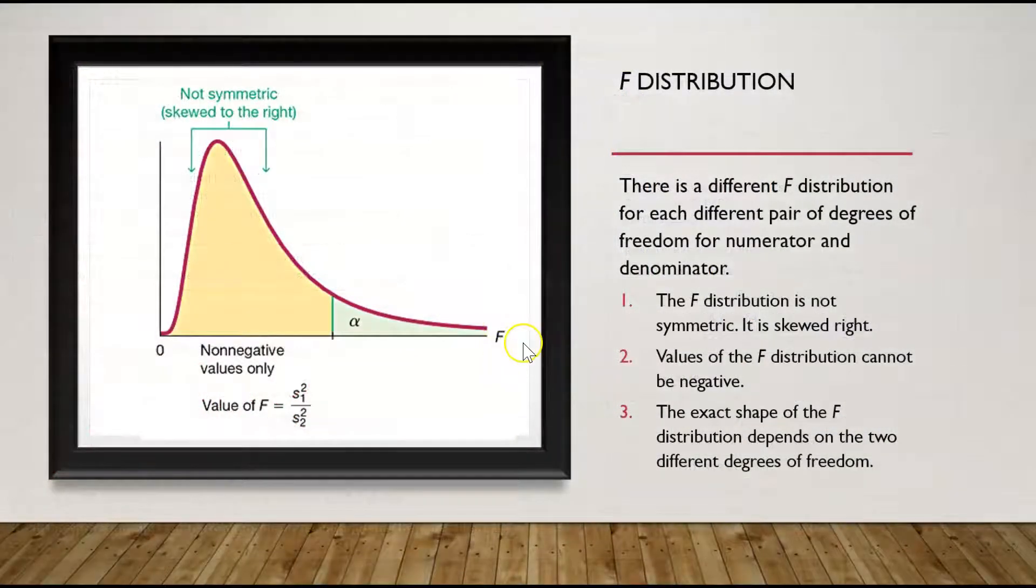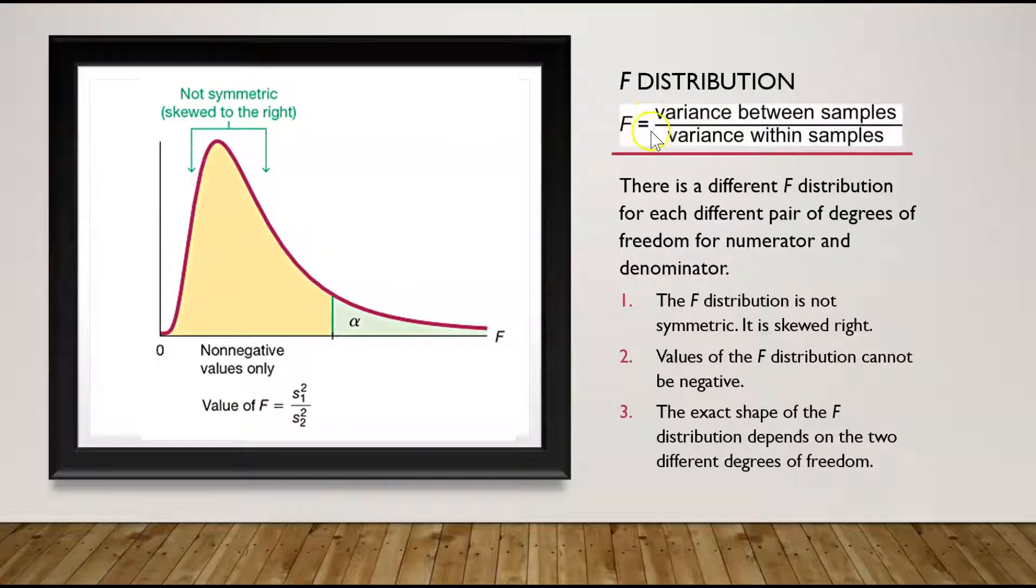Now let's go back to test statistic F statistic and look at F distribution. There is a different F distribution for each different pair of degrees of freedom for numerator and denominator. The F distribution is not symmetric, it is right skewed. Values of F distribution cannot be negative. The exact shape of the F distribution depends on the two different degrees of freedom. The value of F is found by dividing the variance between samples by variance within samples. The numerator of the F test statistic measures variation between the samples. The estimate of variance in the denominator depends only on the sample variances and is not affected by the differences among sample means.